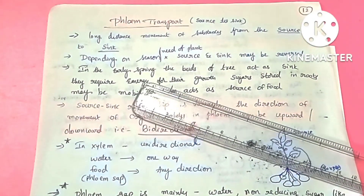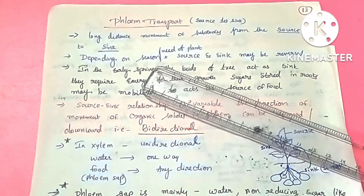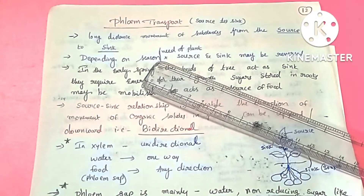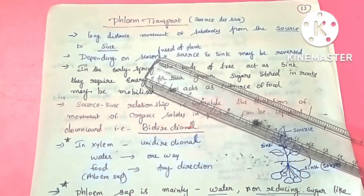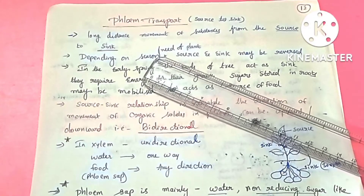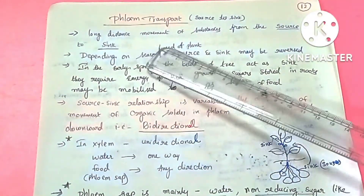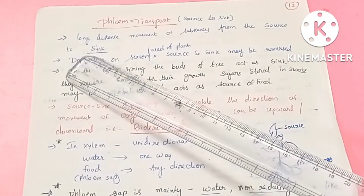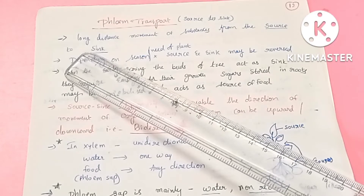Hello everyone, this is Latakula. In this video I am going to cover phloem transport. Phloem transport involves the translocation of food materials, and the food is formed in the leaves.